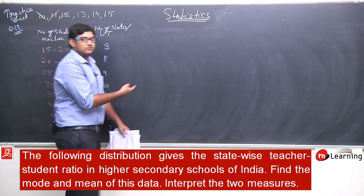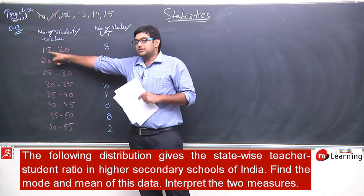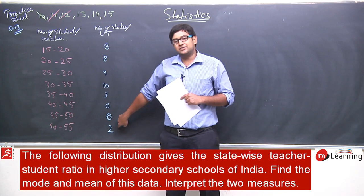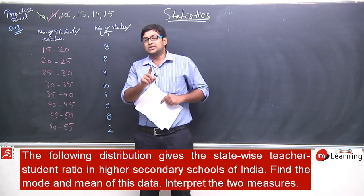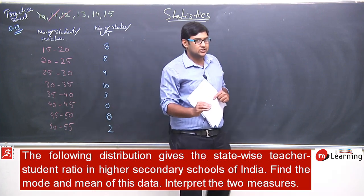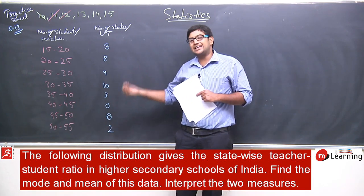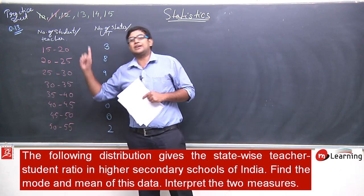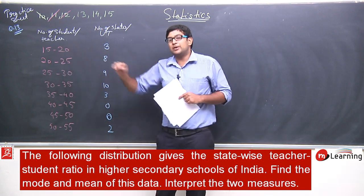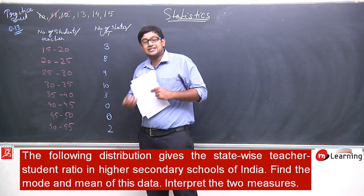So three states have 15 to 20 students per teacher, and two states have 50 to 55 students under one teacher. You can conclude that in those two states there are fewer teachers or more students. In the three states with only 15 to 20 students per teacher, those may be more literate or more developed states, while the two states with 50 to 55 may be more backward states. This is an interpretation we can draw from this data.